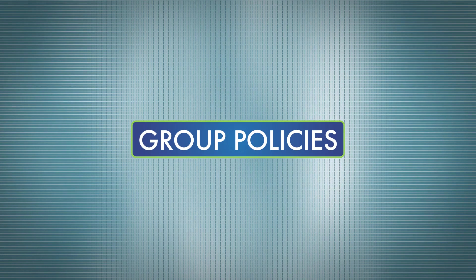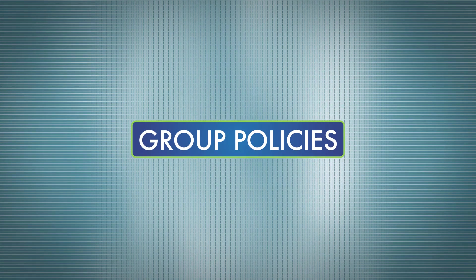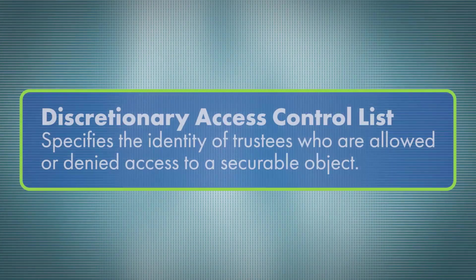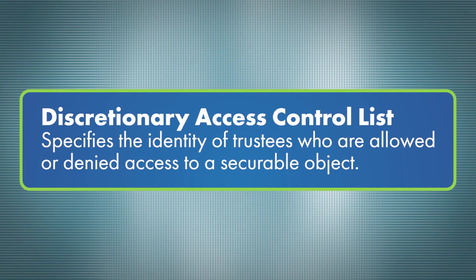An Access Control List, or ACL, contains Access Control Entries, or ACEs. An ACE is intended to control access to a given object by a trustee whose identity is specified. The access rights that the trustee is allowed, denied, or audited are defined in the ACE. An ACL also specifies the operations to be performed on any given object. A Discretionary Access Control List, or DACL, specifies the identity of trustees and operations to be performed on a given object.